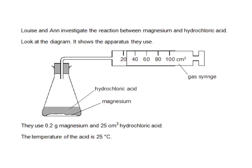Here's a past paper question to finish off. Louise and Anne investigate the reaction between magnesium and hydrochloric acid. They've got 0.2 grams of magnesium and 25 cubic centimetres of hydrochloric acid in the flask. They're reacting and making hydrogen gas which passes along the delivery tube and is collected in the gas syringe. We're told that the temperature of the acid is 25 degrees Celsius.